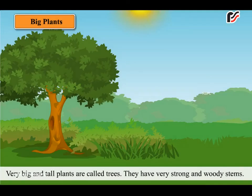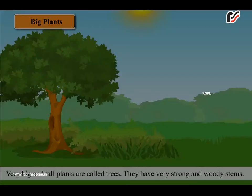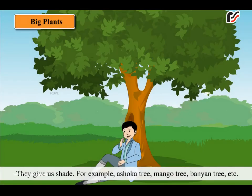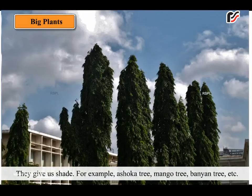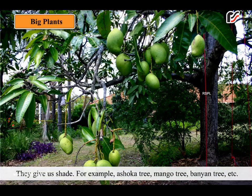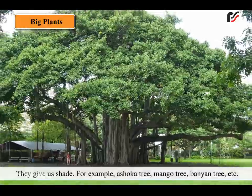Very big and tall plants are called trees. They have very strong and woody stems. They give us shade. For example, ashoka tree, mango tree, banyan tree etc.